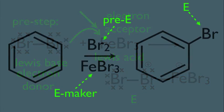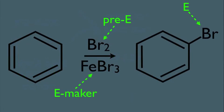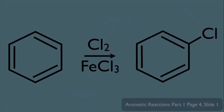So there it is, our overall reaction for halogenation, more specifically bromination of a benzene ring. But you can also add chlorine to a benzene ring. These would be the particular reagents: Cl2 as your pre-electrophile and FeCl3 as your electrophile maker. And of course, the halogen Cl will be the electrophile.